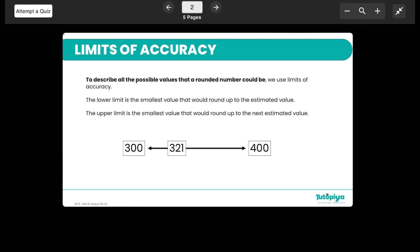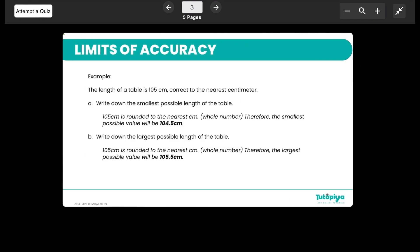And coming to an example. For example, we have 105 centimeters which has been rounded to the nearest centimeter, and we want to find out the smallest and the largest length of this table. That is, we want to find out what could have been this value before it was rounded.